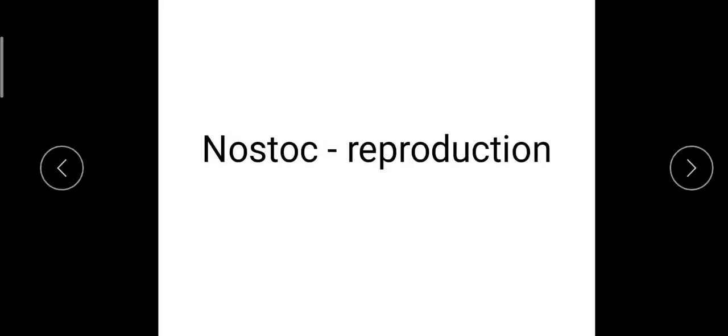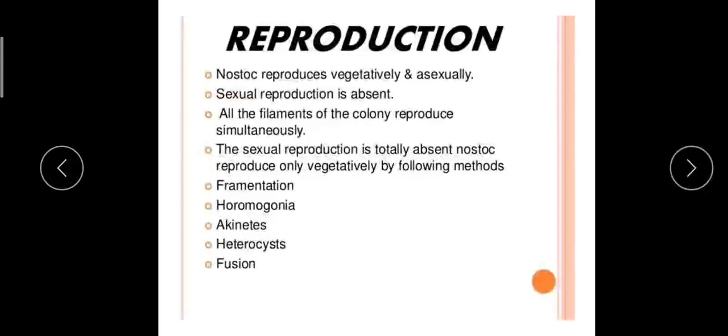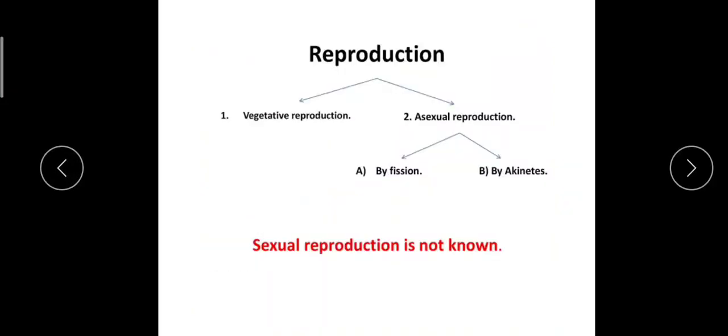Nostoc has reproduction only in vegetative and asexual modes. Sexual reproduction is completely absent in Nostoc. The other modes of vegetative reproduction include fragmentation, hormogonia formation, akinetes, heterocysts, and fission.